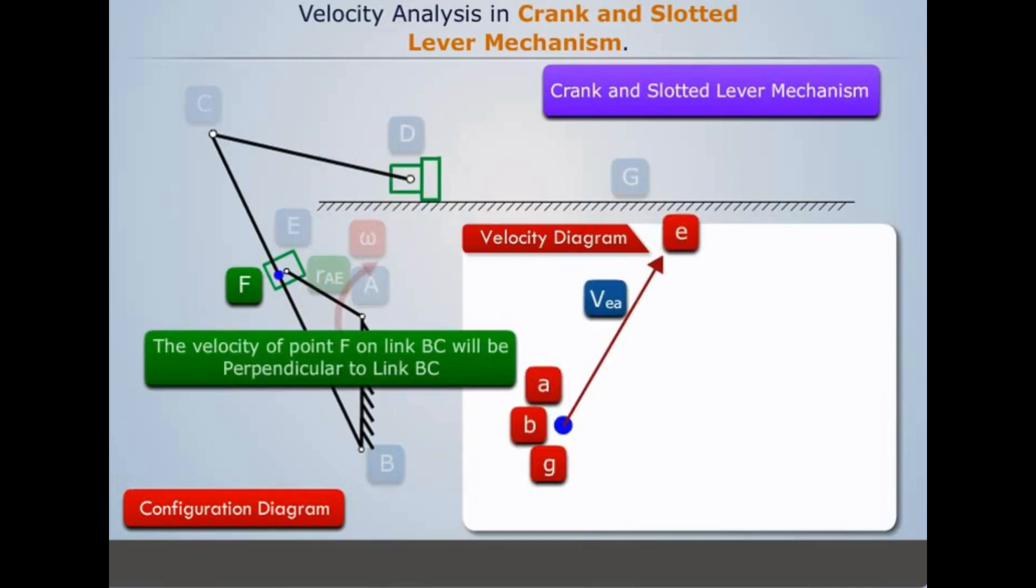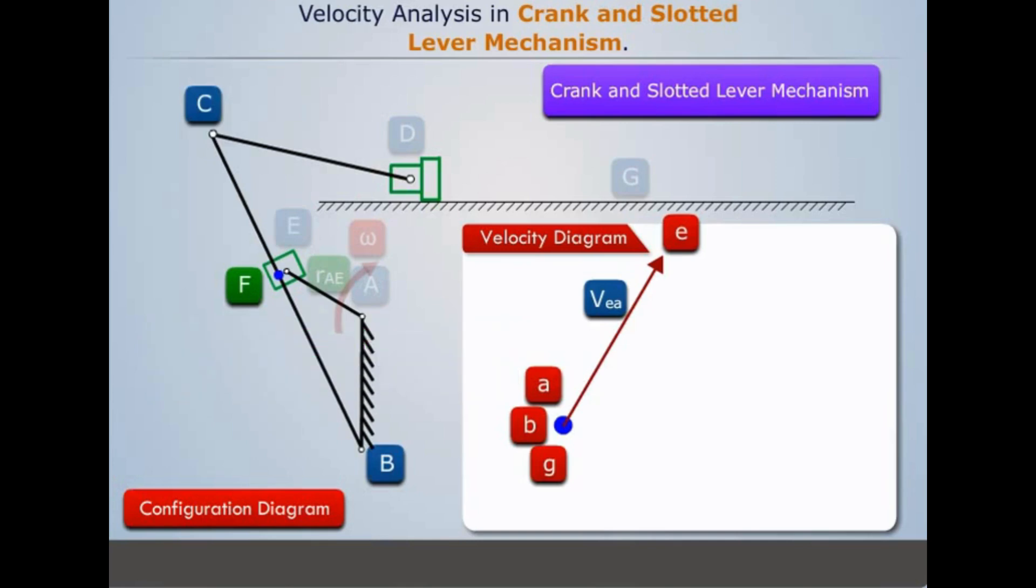The velocity of point F on link BC will be perpendicular to link BC. But since its magnitude is not known, we draw a line of unknown length from point B in direction perpendicular to link BC.